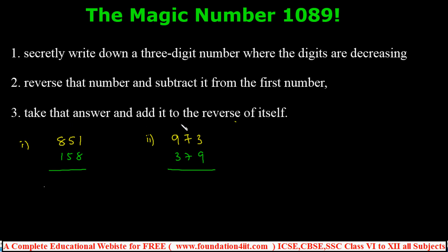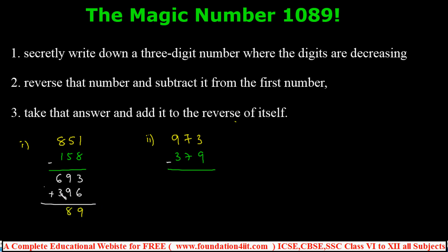Step 3: take the subtraction result and add it to the reverse of itself. For 851 − 158 = 693; reverse of 693 is 396; 693 + 396 = 1089. For 973 − 379 = 594; reverse is 495; 594 + 495 = 1089. You always get 1089.